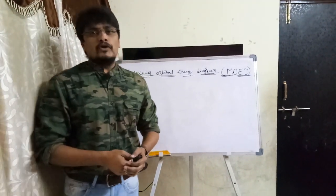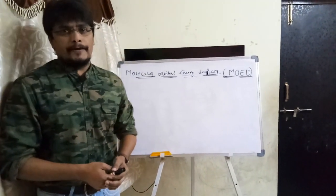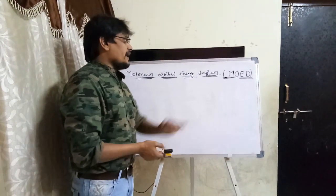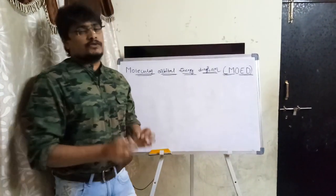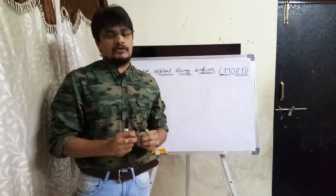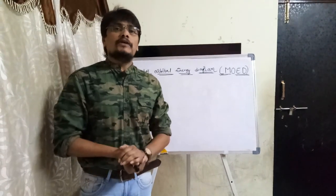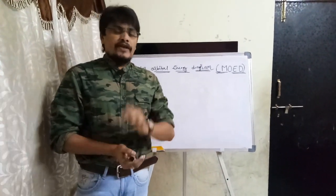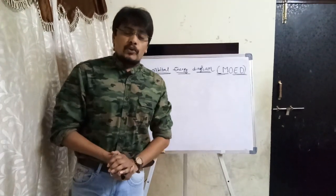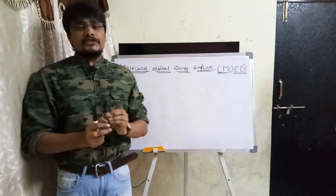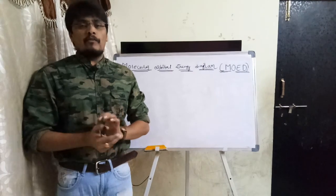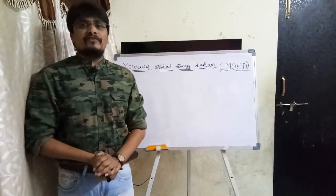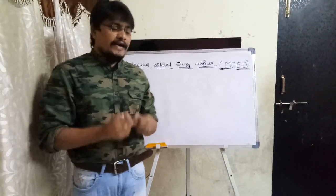Hi students. Today I am going to explain the Molecular Orbital Energy Diagram (MOED) — the very basics of how to construct it. We are going to construct the Molecular Orbital Energy Diagram for the Nitrogen Molecule, Oxygen Molecule, and the Fluorine Molecule. But before that, we have to understand why exactly the Molecular Orbital Energy Diagram came into the picture.